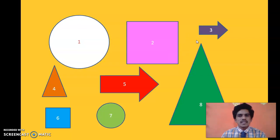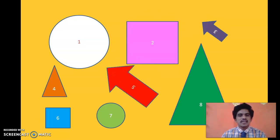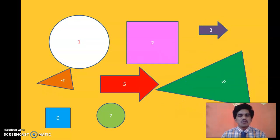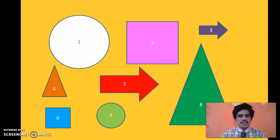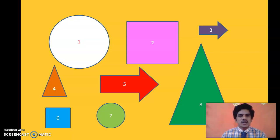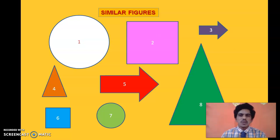Figures 1 and 7 are similar, 2 and 6 have the same shape, 3 and 5 are similar, and 4 and 8 are similar. These pairs have different sizes but the same shape — circles, squares, direction signboards, and triangles. Such shapes are called similar figures. In 9th class we discussed congruent figures: figures with the same size and same shape. But objects with the same shape need not be the same size — such figures are called similar figures.